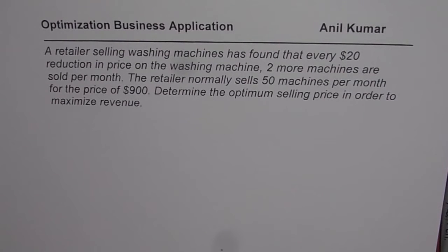I am Anil Kumar and we will discuss a business application on optimization in this video. A retailer selling washing machines has found that every $20 reduction in price on the washing machine, two more machines are sold per month. The retailer normally sells 50 machines per month for the price of $900. Determine the optimum selling price in order to maximize revenue.